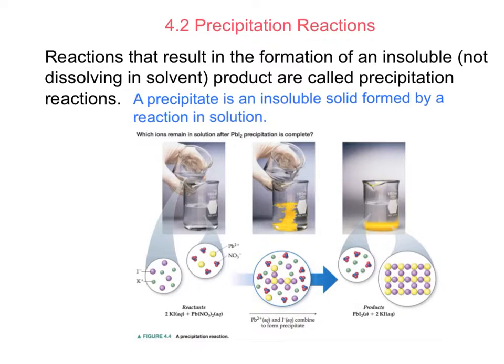Reactions that result in the formation of an insoluble product are called precipitation reactions. When something is insoluble, that means it does not dissolve in water, which is typically our solvent. So when something does not dissolve in a solvent, it's called insoluble. If it does dissolve, like if I took salt and put it in water, it would dissolve - that is soluble. So we have soluble versus insoluble. When a product forms and it does not dissolve in a solvent or water, we call that an insoluble product.